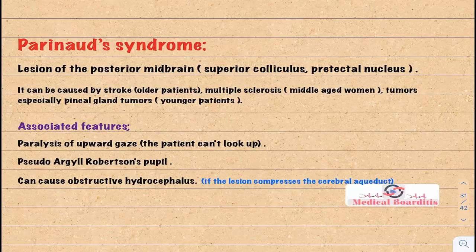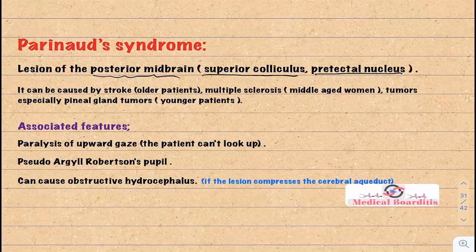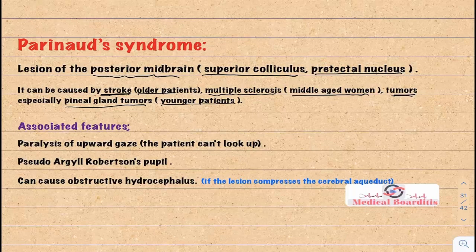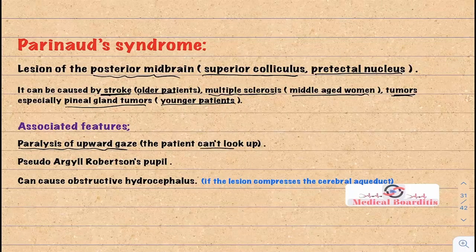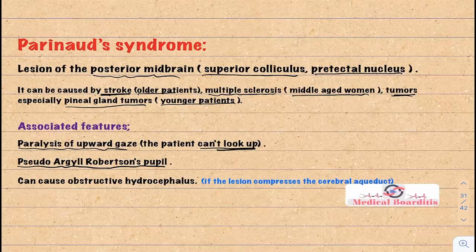Parinaud syndrome is caused by a lesion of the posterior midbrain, including the superior colliculus and pretectal nucleus. It can be caused by stroke in older patients, multiple sclerosis in middle-aged women, or pineal gland tumors (pinealoma) in younger patients. Features include: paralysis of upward gaze; pseudo-Argyll Robertson pupil due to pretectal nucleus lesion — loss of light reflex with preserved accommodation (similar to neurosyphilis); and if the lesion compresses the cerebral aqueduct, obstructive hydrocephalus can result.